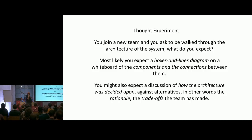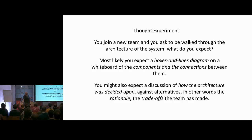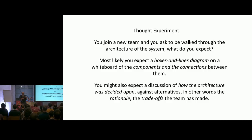What you might also get is a bit of history — they'll say 'we made this choice, we decided to do this, at some point we were never able to solve this problem so we hacked around it.' So you get a discussion about the trade-offs made to achieve the business's goals. Those two things — some boxes and lines, plus a potted history of software development in the organization — are instinctively what people do when you ask them to describe the architecture.